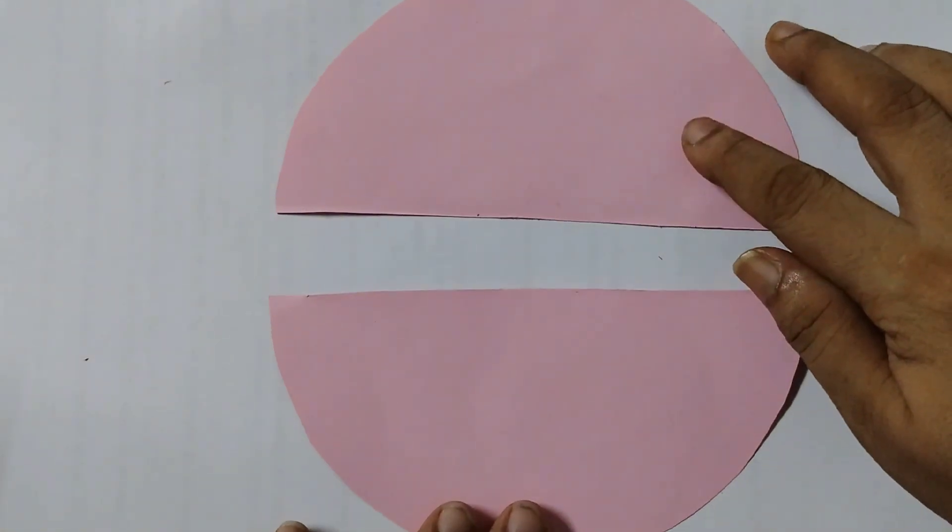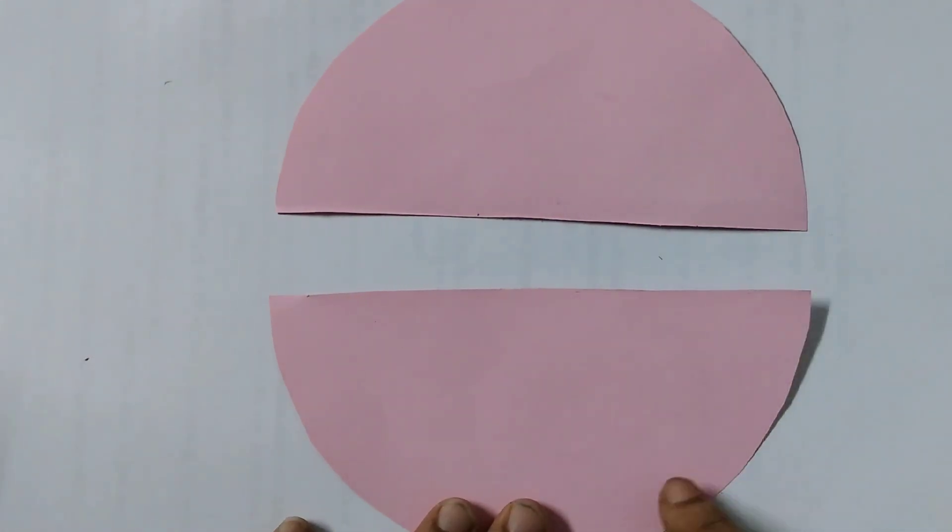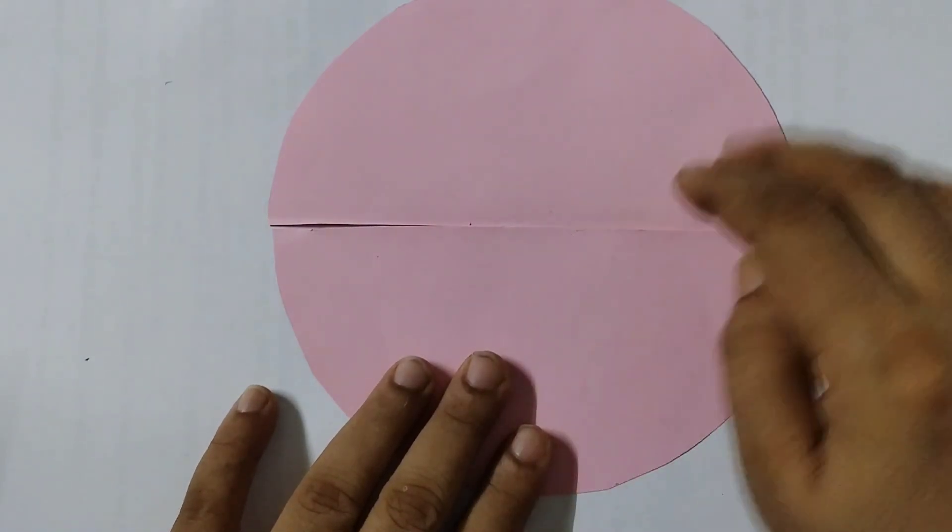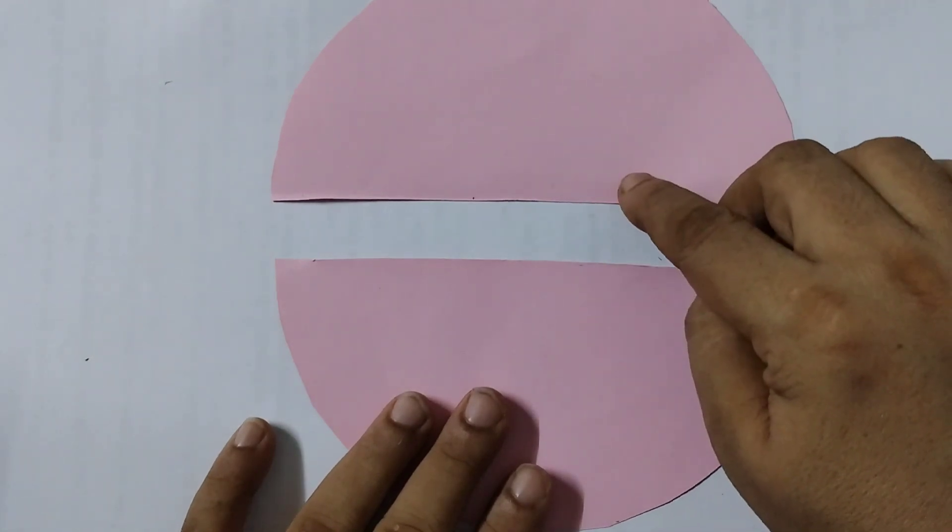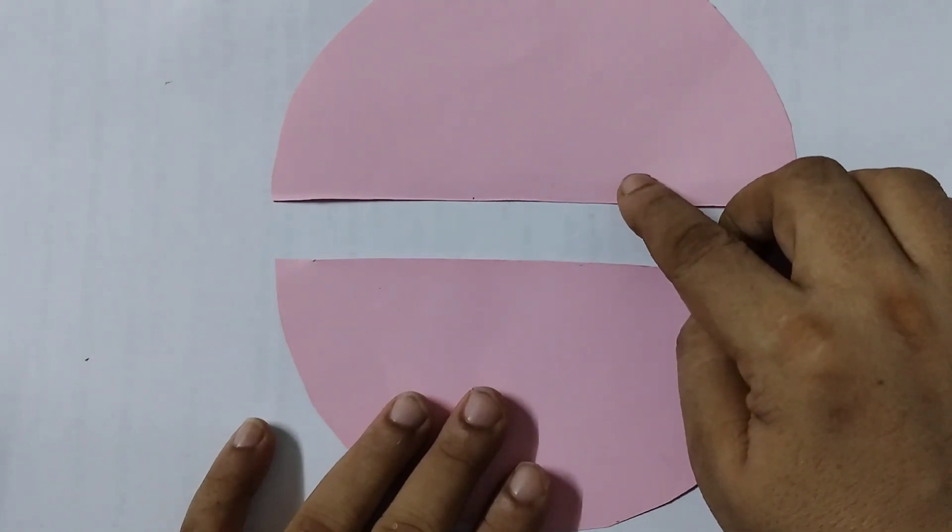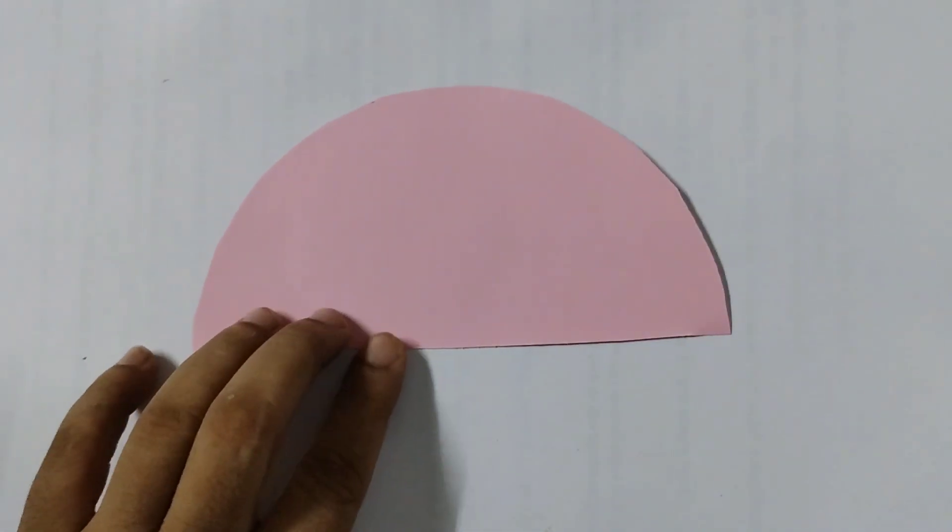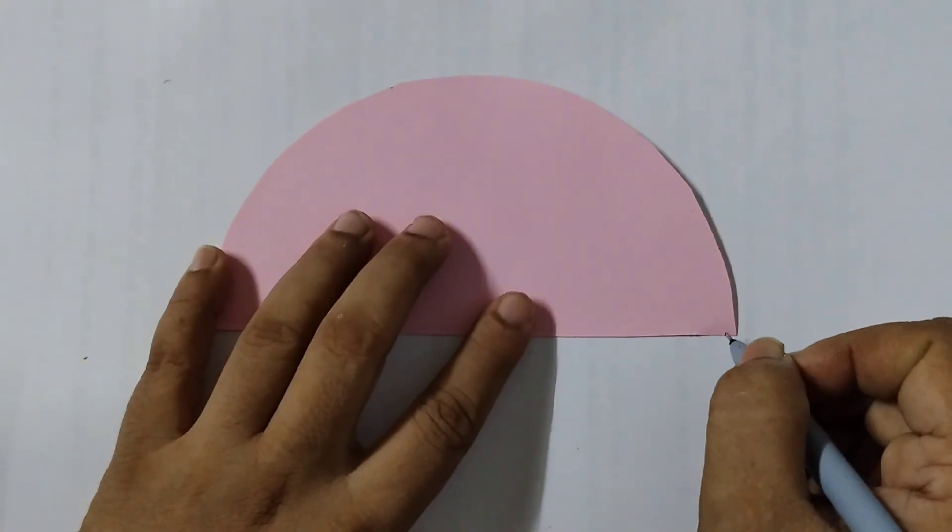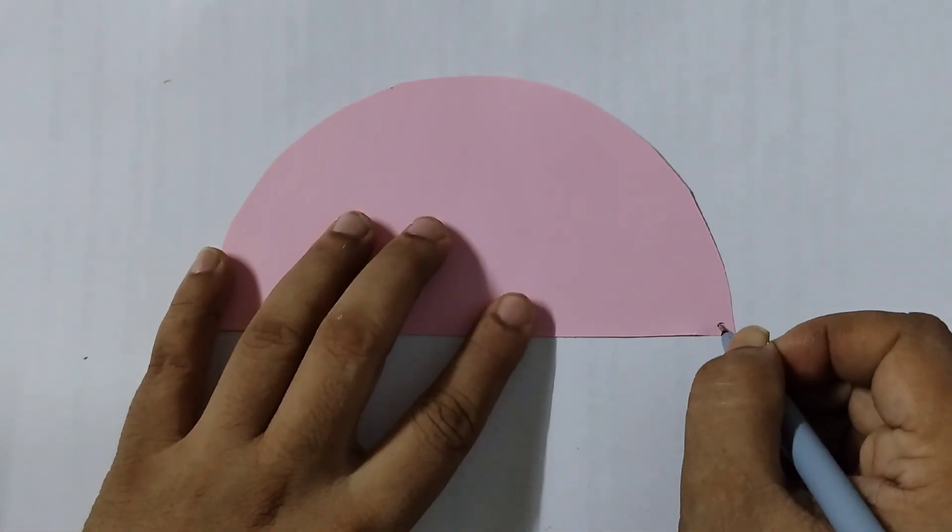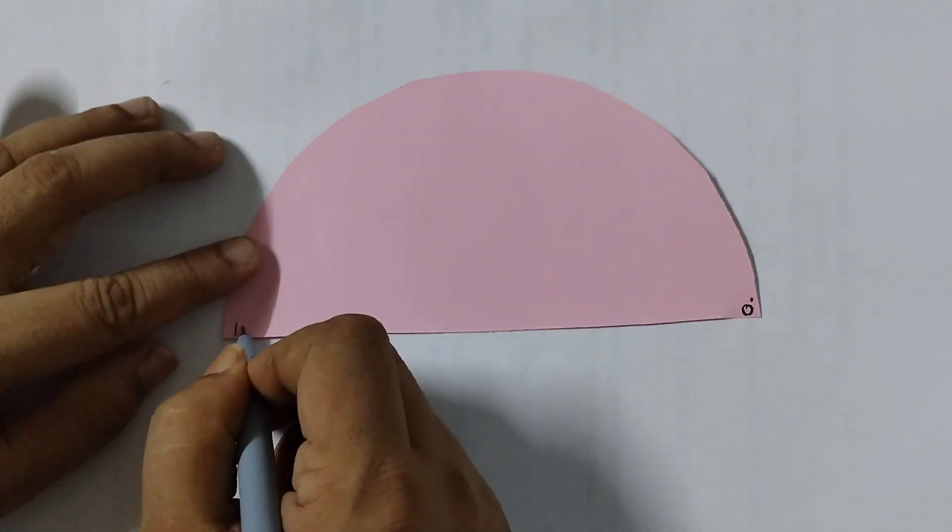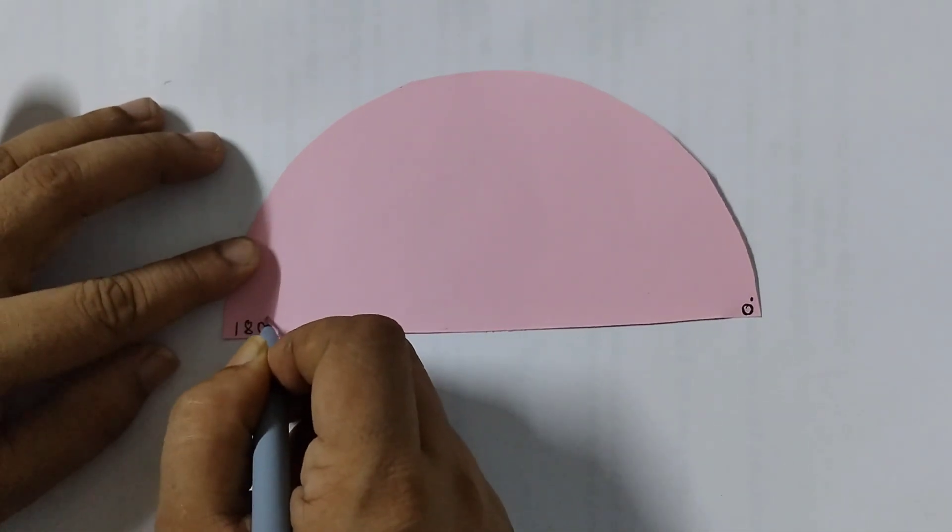Now we see we get two semicircles. We are going to use only one semicircle to make our paper protractor. This full turn is 360 degrees, and if I take the semicircle, that is half of the full turn, that will be 180 degrees. Let's take this one for making a protractor. Here we will write zero degrees, this is 0 degrees, and this end is 180 degrees.